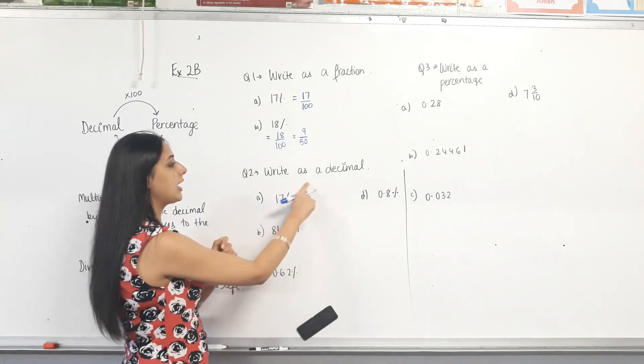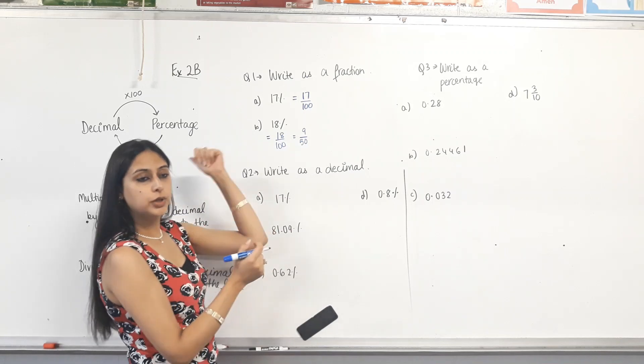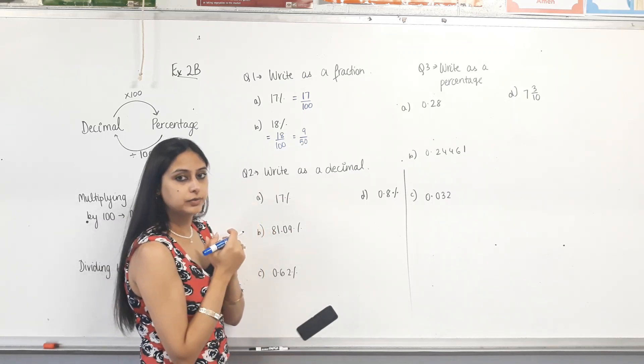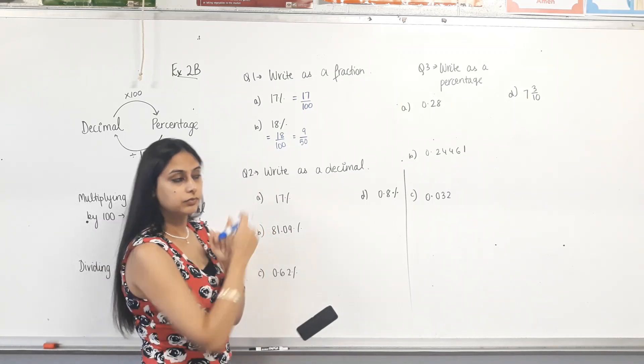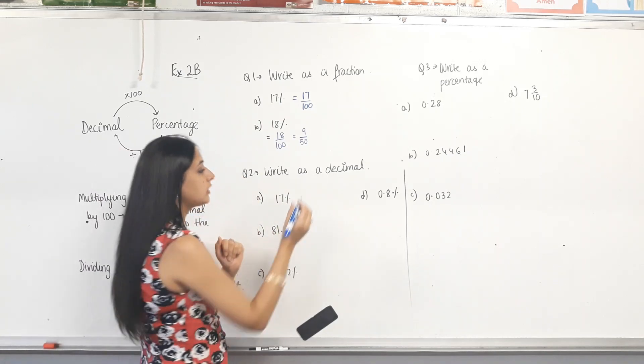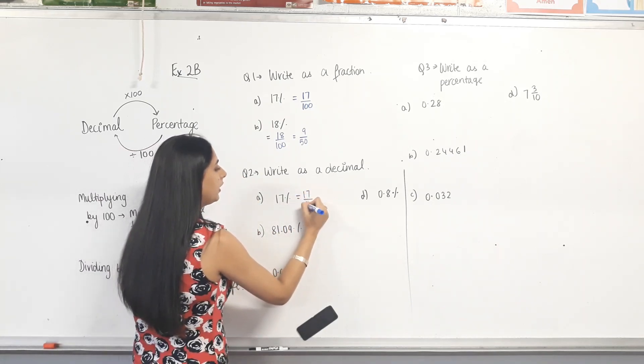Next one. Write as a decimal. What do we do? Percentage to decimal. Have a look. Percentage to decimal, what do we do? Divide by 100.